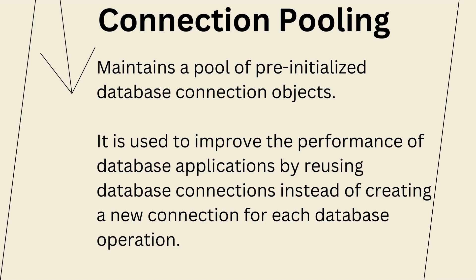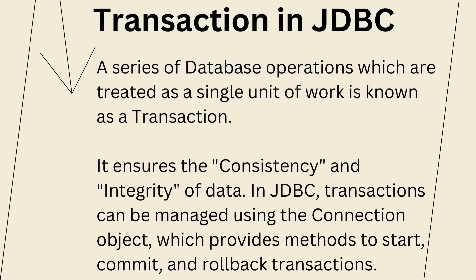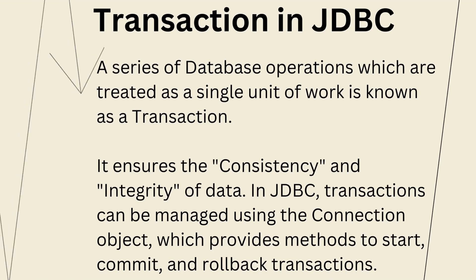A transaction in JDBC represents a single unit of work. It can contain one or more statements, and with transactions we can ensure that ACID properties are followed. In JDBC, transactions are managed using the connection object, which provides methods to start, commit, and roll back transactions.